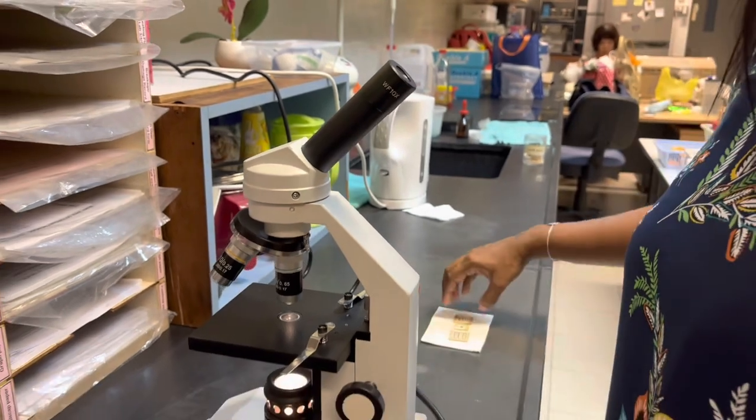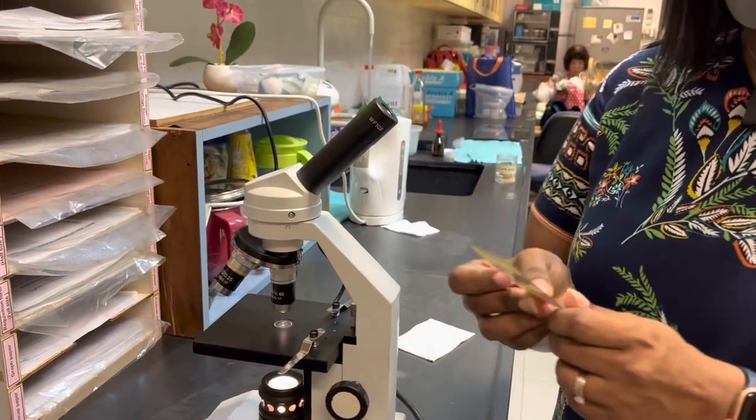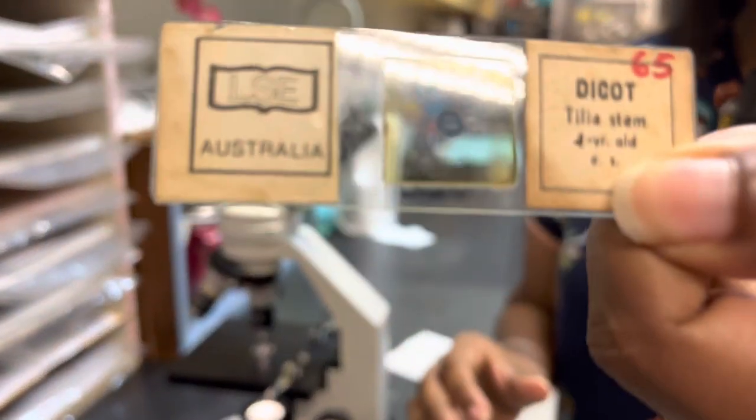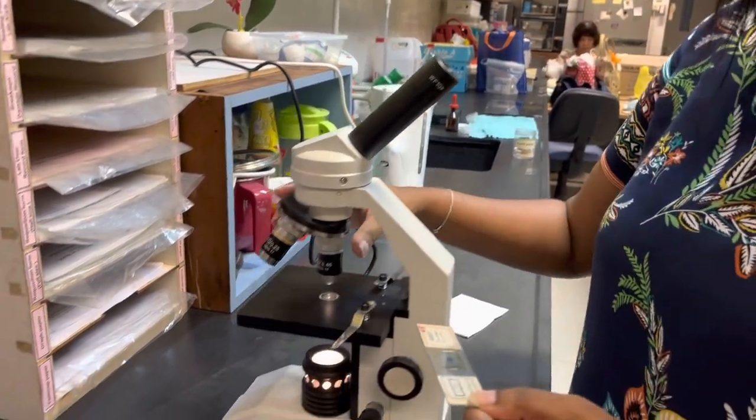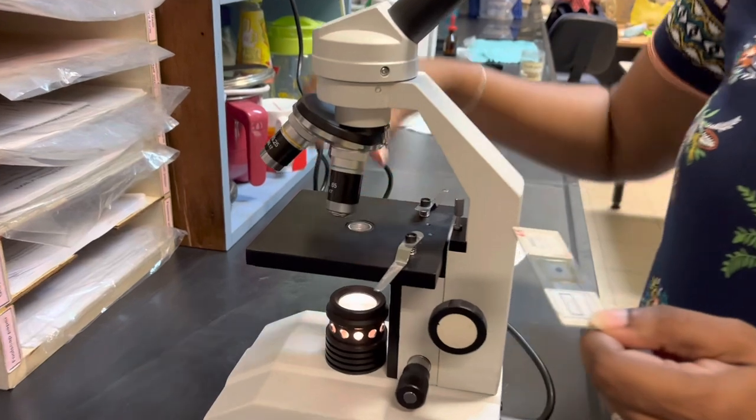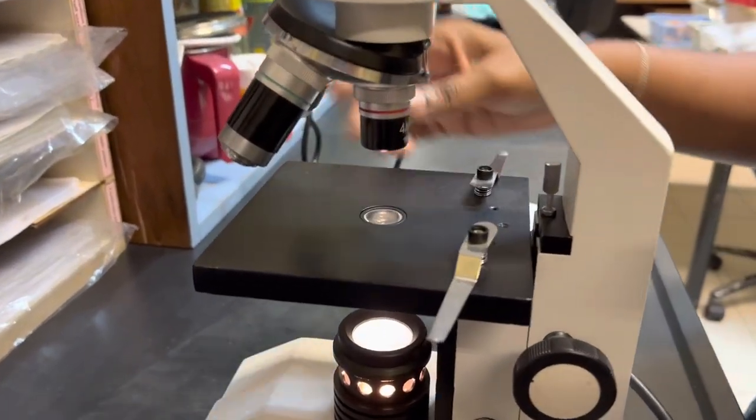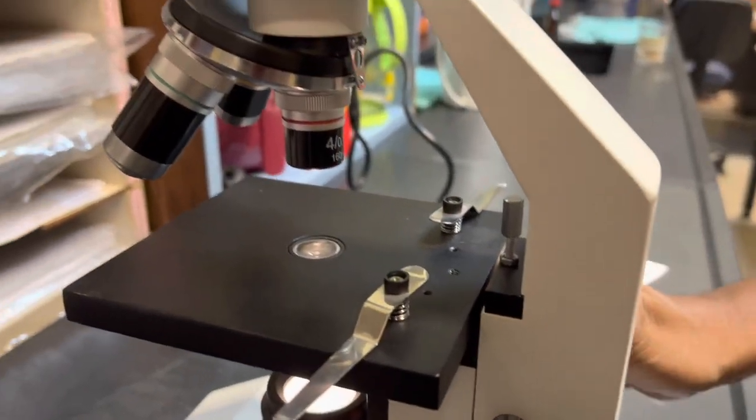Let's start now using a prepared slide. We will be viewing a dicot stem under the microscope. The first thing you need to do is turn to the lowest power and make sure that the stage is at the lowest point possible.